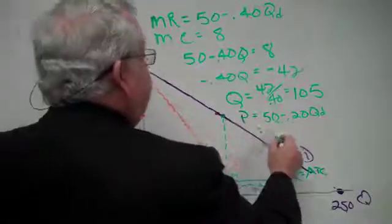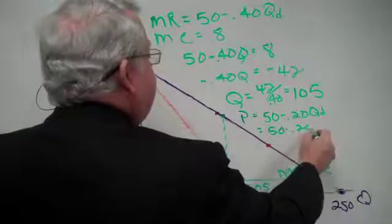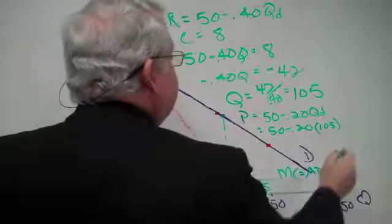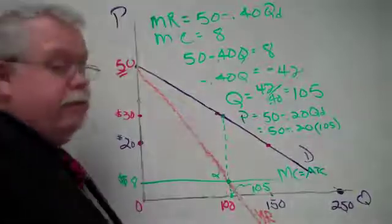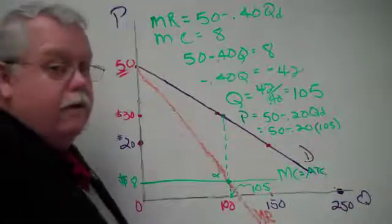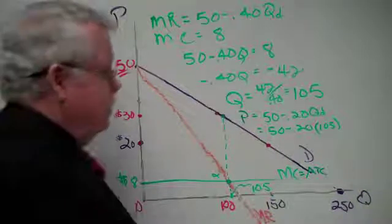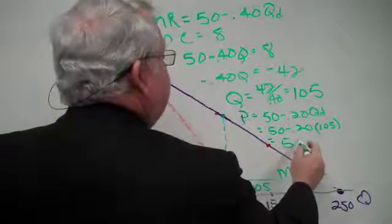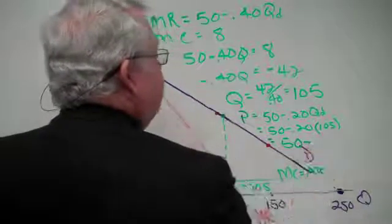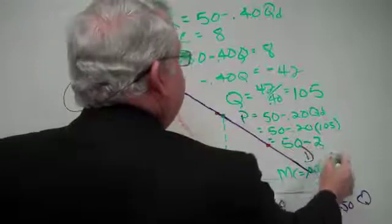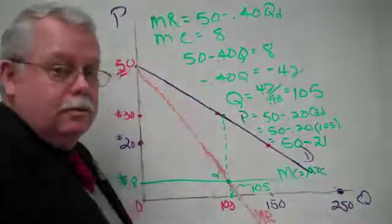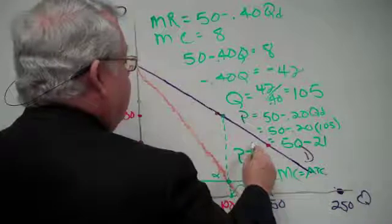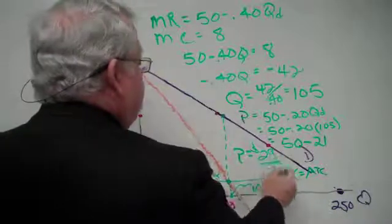So we get 50 minus 0.20 of 105. So what's 20% of 105? You got it? 20% of 105. 50 minus 21. So the price should be $29.